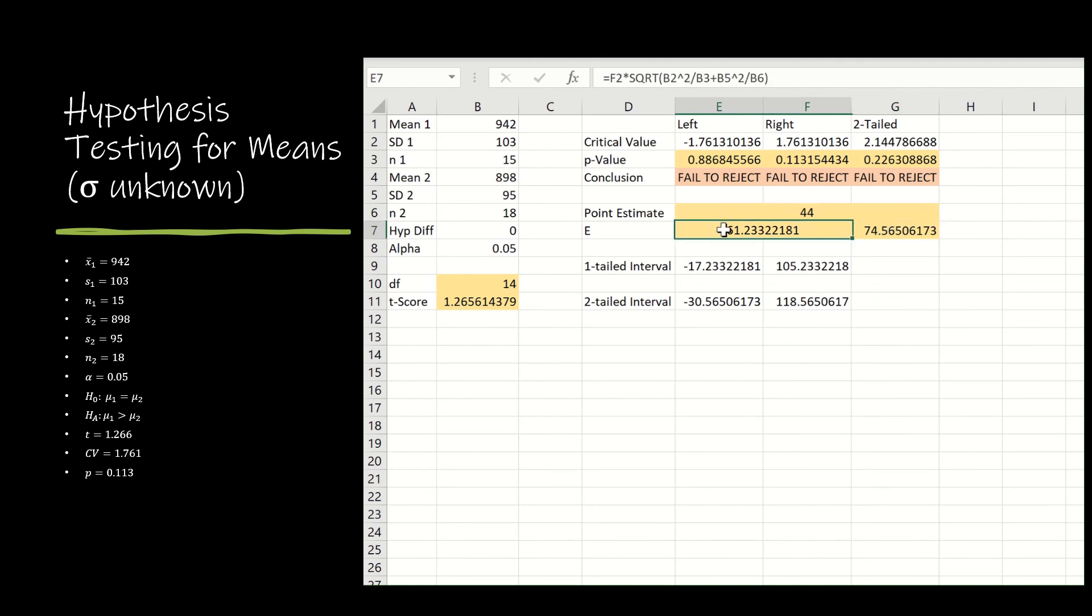and I'm going to multiply it by the square root of b2 squared divided by b3 plus b5 squared divided by b6, which is just the standard deviations squared divided by each respective sample size. I'm going to do the exact same thing for the two-tailed, except I'm using that two-tailed critical value. So that's the only difference between the two E, or margin of error, values.